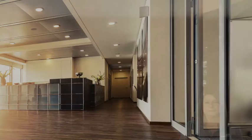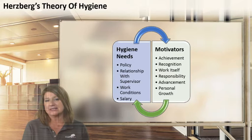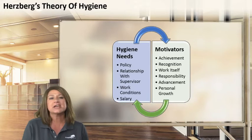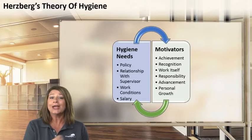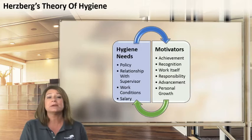The next theory is Hertzberg's Theory of Hygiene. Basically, this has to do with the health of the organization needing to be intact in order to truly motivate with motivators. Hygiene needs are things like work conditions — making enough money to stay at the job, having time off, and good policy. Once those things are in place and the organization is healthy, then you can truly motivate with things like reward and recognition, achievement, promotions, and personal growth. Hertzberg said organizations need to be healthy before you can motivate.